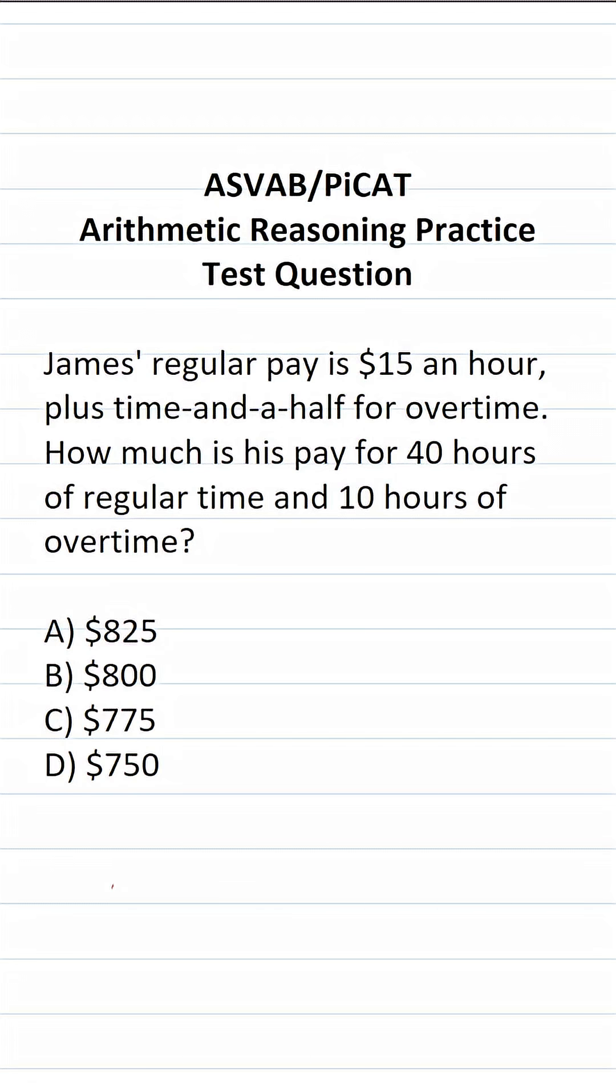All right, so first we know that he's going to get paid $15 an hour for working 40 hours, so let's find out how much that is. 5 times 0 is 0, 4 times 5 is 20. Before we start multiplication with this 1, we're going to bring in a 0 placeholder. 1 times 0 is 0, 1 times 4 is 4. 200 plus 400 is 600. So he's going to make $600 for his 40 hours of work.